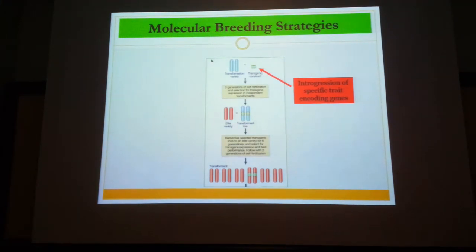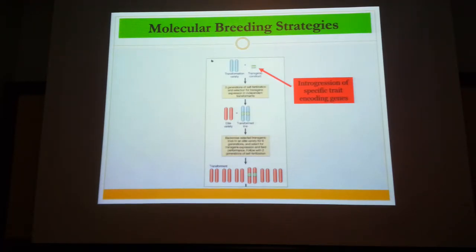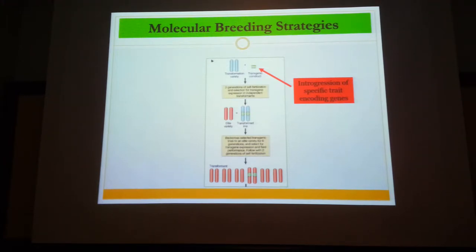The concept of molecular breeding involves transforming a single gene or a multiple set of genes associated with a specific trait from a plant using genetic engineering and synthetic biology, as opposed to using a conventional breeding approach.